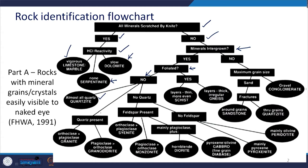If quartz is present but in some quantity, see whether orthoclase is more than plagioclase. We have seen in the previous class how to differentiate between orthoclase and plagioclase. If orthoclase is more than plagioclase, then it is granite, and if it is the other way round, then it is granodiorite.